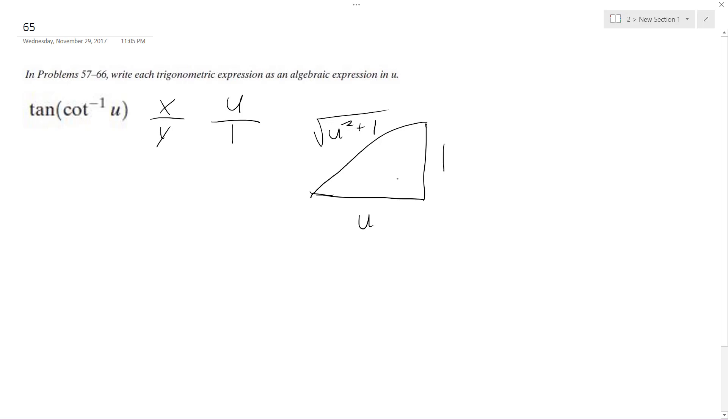And then tangent's just going to be opposite, which is 1, over adjacent, which is u. So it's going to be 1 over u.